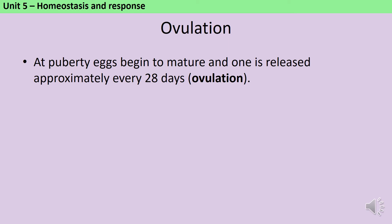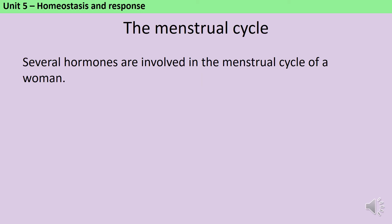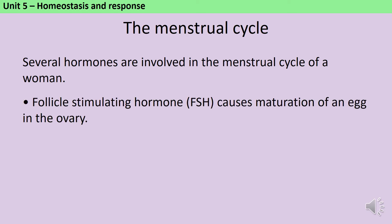When girls reach puberty, the eggs in their ovaries begin to mature, and each month one of these is going to be released as part of the menstrual cycle, in a process called ovulation. Although oestrogen is responsible for the development of the secondary sexual characteristics, there are actually four female reproductive hormones that you need to be able to describe the interaction of, and these together are going to bring about the menstrual cycle. The first of these hormones is follicle-stimulating hormone, or FSH for short, and this is responsible for an egg becoming mature so that it's ready to be released. It might help you to remember this if you know that the follicle is the little sack that the egg is sat in, so when it's stimulated by FSH, this causes the egg to mature.